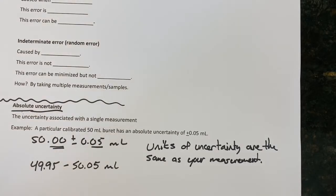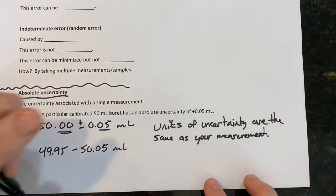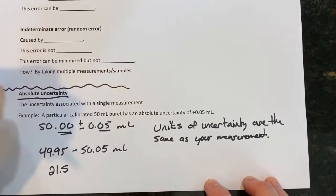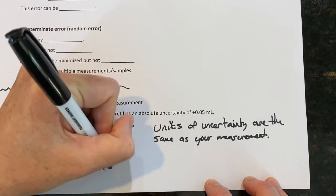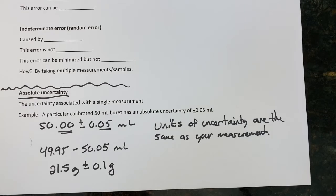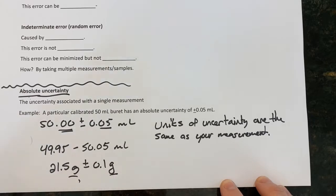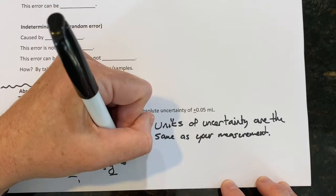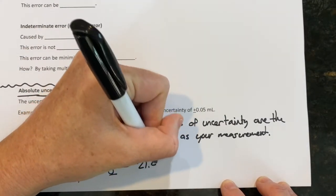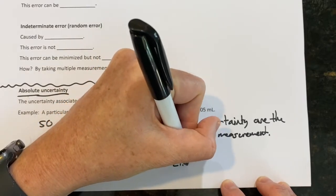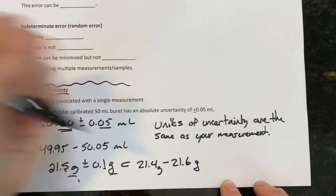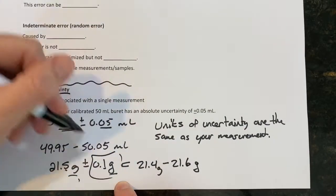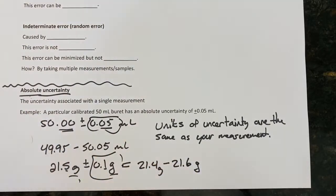Another example: if you take the mass of something and find it's 21.5 grams ± 0.1 gram, that might be a really crappy balance, but you can quickly see they both have the same units and the same precision. You can add or subtract 0.1, meaning the value is actually equivalent to a range of 21.4 to 21.6 grams. That's what absolute uncertainty means.